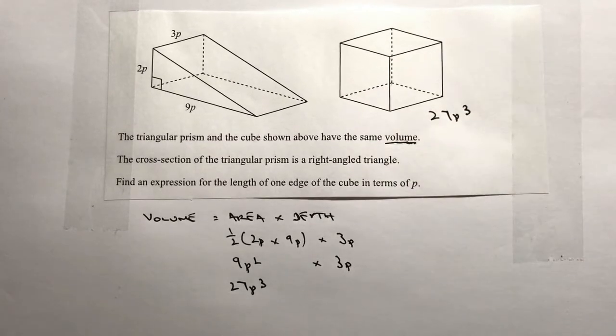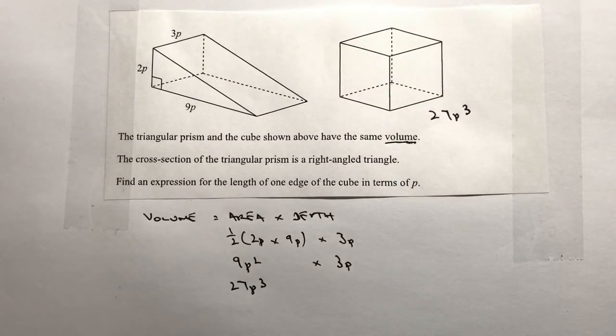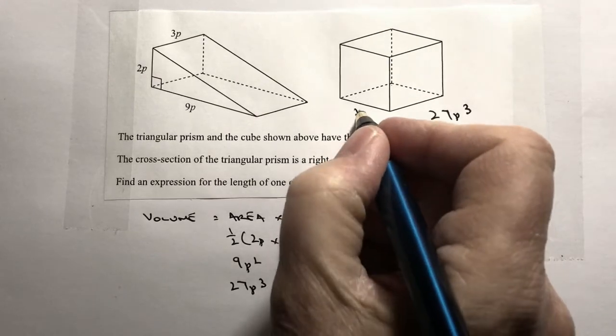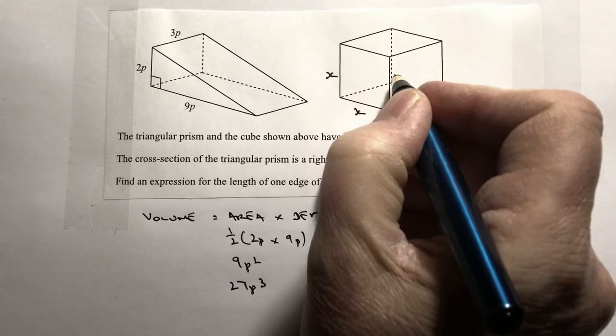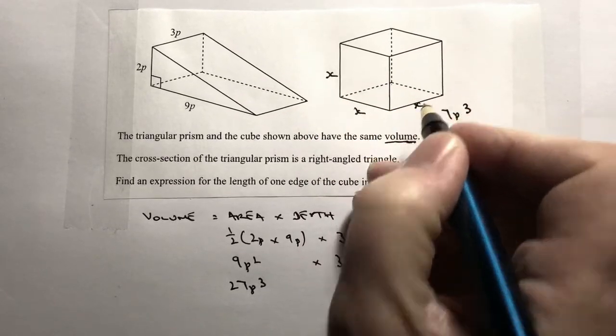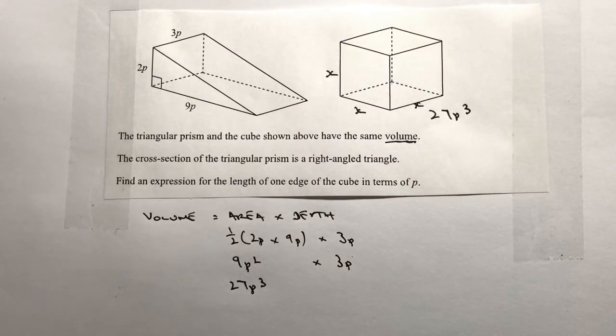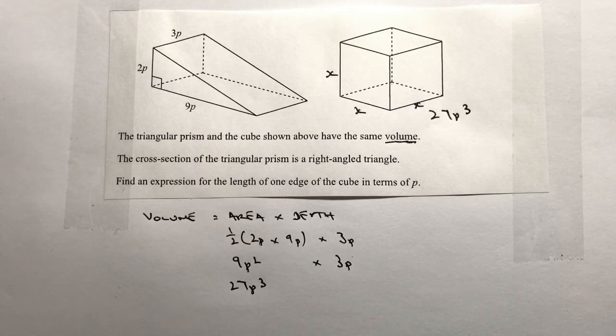Now, in order to work out the length of one side of the cube, you've got to imagine that each of these is—let's call it x—and x and then x. In other words, we're looking at the same number multiplied by the same number multiplied by the same number, and that equals 27p cubed.